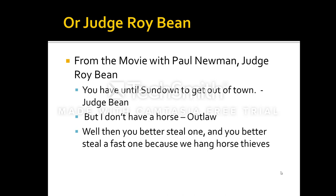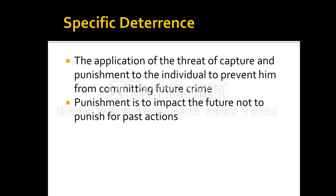From the movie with Paul Newman, Judge Roy Bean, you have Paul Newman playing Judge Roy Bean say to an outlaw, "You have until sundown to get out of town." The outlaw replies, "But I don't have a horse." And he says, "Well, you better steal one, and you better steal a fast one, because we hang horse thieves."